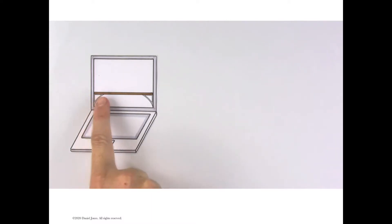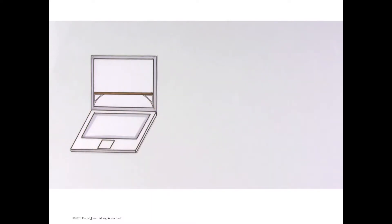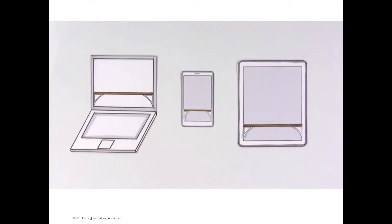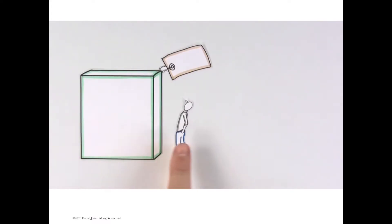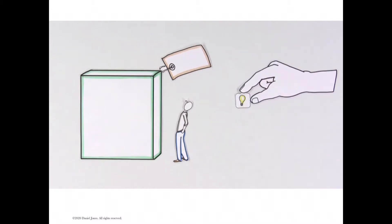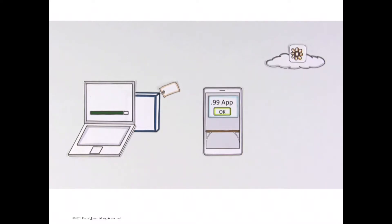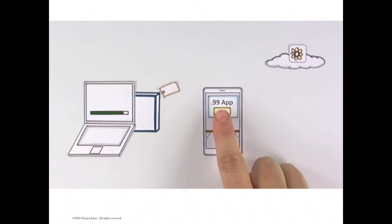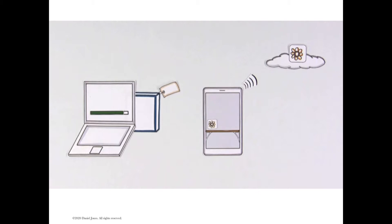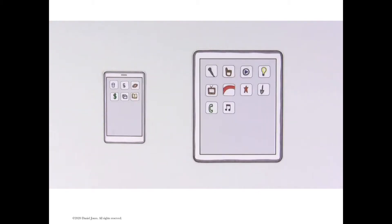Recently, platforms changed in big ways. Our mobile phones and tablets became useful platforms just like our computers, and this enabled a different kind of app. Instead of big, expensive programs, many apps became smaller and cheaper. Instead of coming in a box or taking hours to download, they could be purchased or downloaded for free from the internet with a click, even on the go. This made apps collectible.